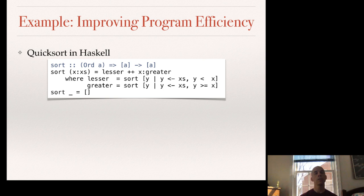Let me step back and give you an example. This is the Quicksort implementation in Haskell. It defines a function sort that takes a list as an argument. It picks a pivot element x — the first element of the list — then concatenates all elements less than x (lesser) with all elements greater than x (greater), with x in the middle. The lesser and greater are determined by a where clause that individually sorts those elements on either side of the pivot.